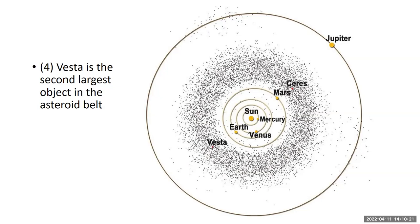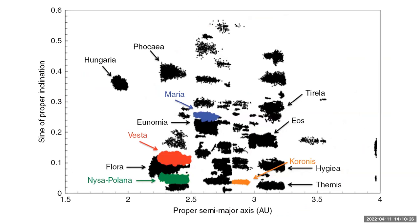This plot shows proper semi-major axis — the average distance between the object and the Sun — versus the sine of the proper inclination, which is the inclination to the ecliptic. You can see all these asteroid families located throughout the asteroid belt. In red is the Vesta family — it's somewhat dispersed, but all these objects have similar orbital elements: semi-major axis, eccentricity, and inclination. So they match up well in three dimensions. Vesta is one of the largest families in the inner asteroid belt.